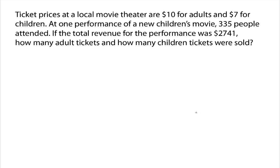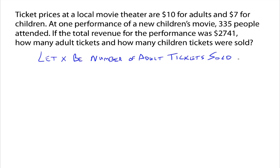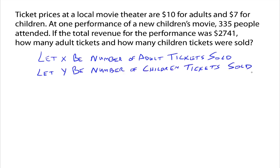Begin like we always do with word problems and define our variables. So let X be the number of adult tickets that are sold, and since we're looking for two things, we'll let Y be the number of children tickets sold. As usual with most word problems, the hardest part is coming up with the equations. In this case, there's going to be more than one equation. We're looking for two things, so we need two equations.